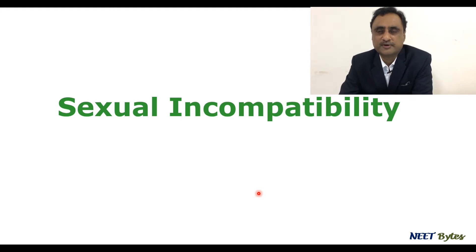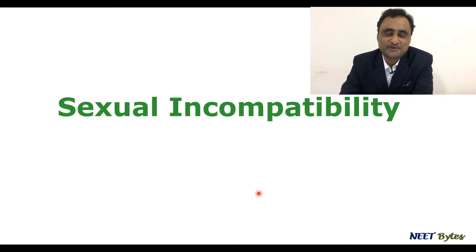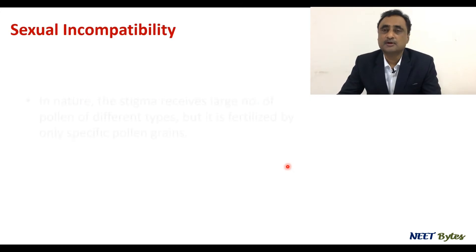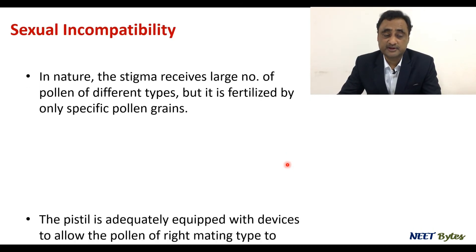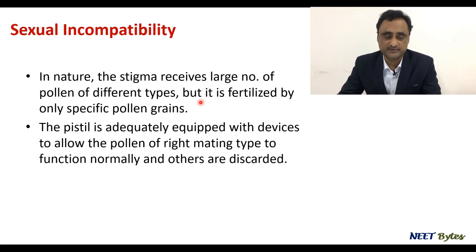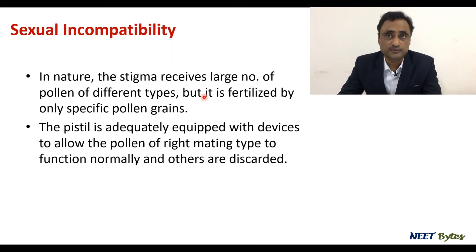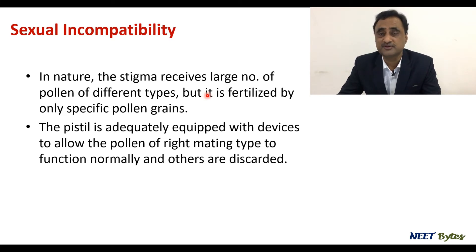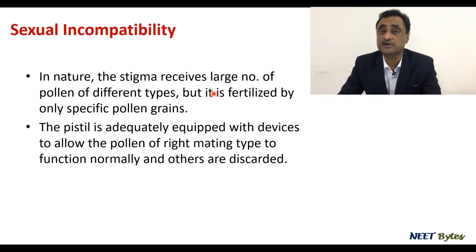This is Dr. Pankaj Kumar, your mentor, and in today's session we will be talking about sexual incompatibility. In nature, the stigma receives a large number of pollen of different types but is fertilized by only specific pollen grains. The pistil is equipped enough to accept pollen grains of its choice, and this happens by reactions between the protein of the pistil and the protein of the pollen grains — this is what we call protein-protein interactions.